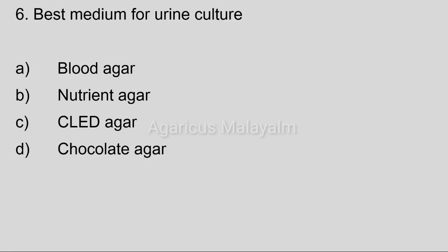Sixth question: Best medium for urine culture? Option A: blood agar. Option B: nutrient agar. Option C: CLED agar. Option D: chocolate agar. Correct answer: Option C, CLED agar.